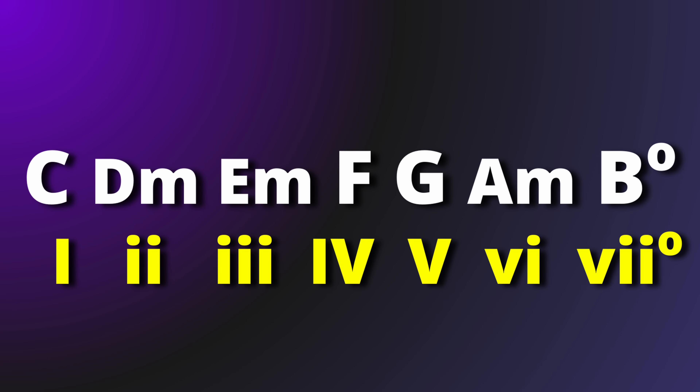If we take the C major key, which I'll use for examples later, then the following chords are used for each of the numerals: one is C major, two is D minor, three is E minor, four is F major, five is G major, six is A minor, and seven is B diminished. These are known as the diatonic chords of the key of C major.